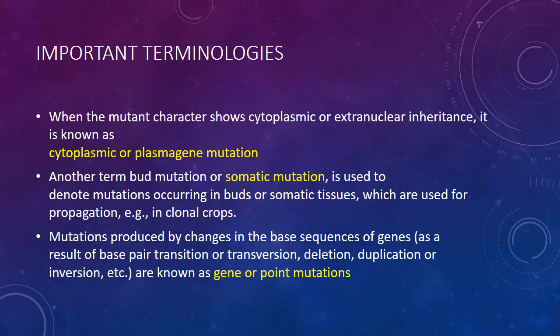Some important terminology related to mutations: when the mutant character shows cytoplasmic or extra-nuclear inheritance, it is known as cytoplasmic or plasmagene mutation. Another term, bud mutation or somatic mutation, is used to denote mutations occurring in the buds or somatic tissues which are used for propagation, for example in clonal crops.